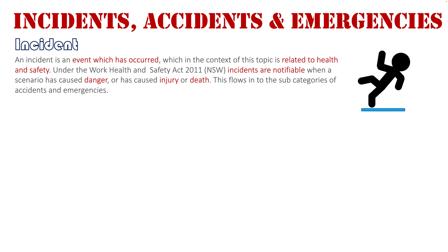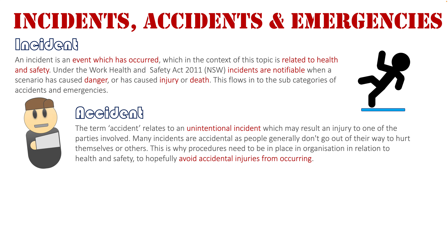This flows into the subcategories of accidents and emergencies. The term accident relates to an unintentional incident which may result in an injury to one of the parties involved. Many incidents are accidental as people don't generally go out of their way to hurt themselves or others. Things happen when you're doing work in the workplace — you trip over a cord, you accidentally slip while using equipment, you bump into someone, you drop something. These are accidents, which is why procedures need to be in place in organizations to support health and safety and hopefully avoid accidental injuries.